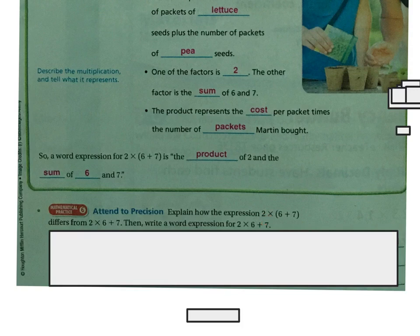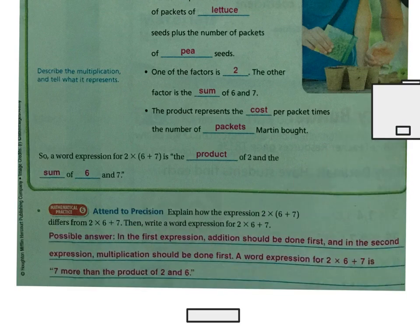Because six plus seven would be 13, and then multiplying that times two gives 26 — very different answers. In the first expression, the addition is done first. In the second expression, the multiplication is done first. So the word expression for two times six plus seven is seven more than the product of two and six.